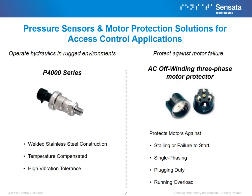Pressure sensors and switches are used in access control applications that use hydraulic systems. They are found in the pump station that controls the rising and lowering of the unit. Pressure ranges in these applications typically range from 100 to 260 psi and require accuracy but must also be cost effective. The P4000 pressure sensor uses stainless steel construction and viscous resistive sensing technology to create a robust but accurate sensor, ideal for access control applications that use hydraulic systems to move an apparatus.